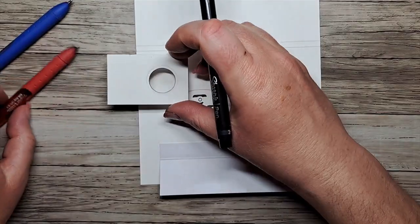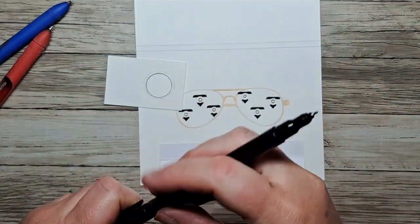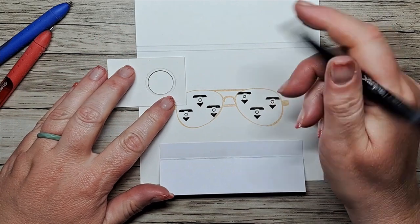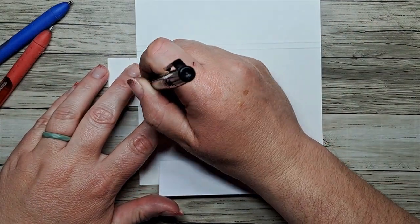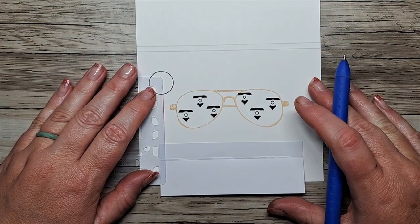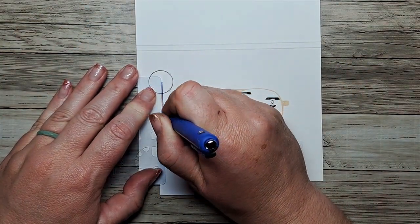And now we're going to locate our battery. I just use a circular die cut shape that I trace inside. There's the location of our battery. We're not actually going to use a battery holder today. We're just going to tape in our battery.